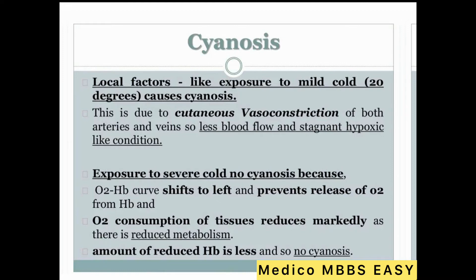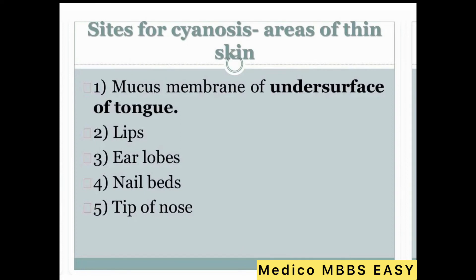In cold exposure, there is cutaneous vasoconstriction of both arteries and veins, so less blood flow and stagnant hypoxia-like conditions. However, exposure to severe cold produces no cyanosis because the oxygen-hemoglobin curve shifts to the left, preventing release of oxygen from hemoglobin, and oxygen consumption of tissue is reduced markedly due to reduced metabolism. The amount of reduced hemoglobin is therefore less, so no cyanosis.